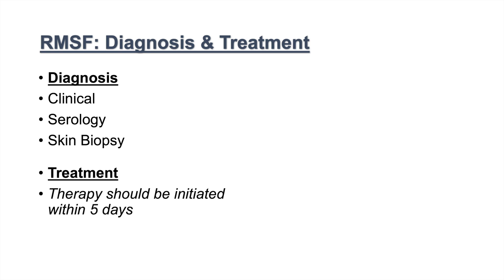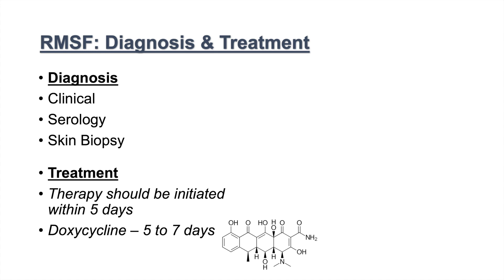Treatment of Rocky Mountain Spotted Fever is specific and important to remember. We should try to start therapy within five days of onset of symptoms. The treatment is doxycycline — a tetracycline — and we treat for five to seven days. Defervescence, or the abatement of fever, will generally occur within three days of treatment.